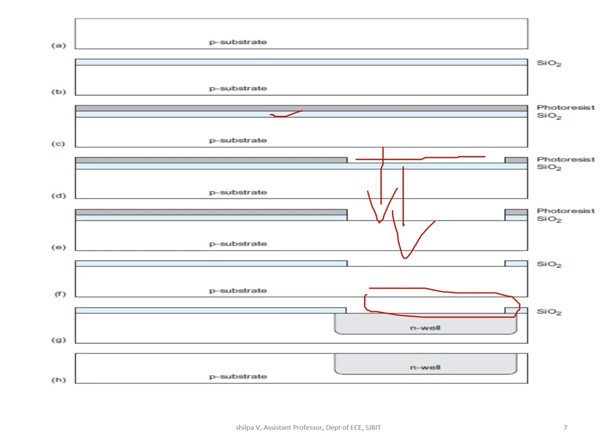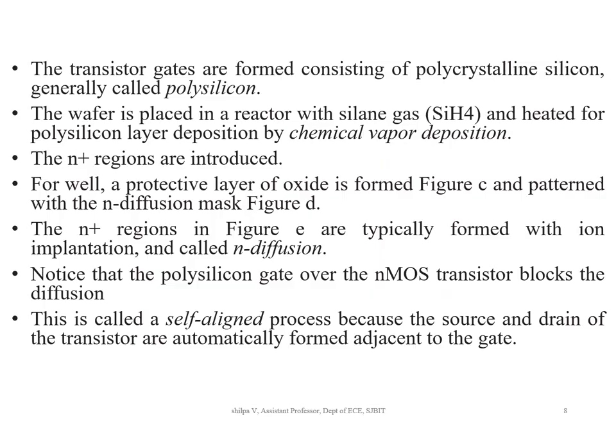The well is formed where the substrate is not covered with oxide. Two ways to add dopants are diffusion and ion implantation. In diffusion, the wafer is placed in a furnace with gas containing dopants. In ion implantation, dopant ions are accelerated through an electric field and blasted into the substrate. The oxide layer prevents dopants from entering where no well is intended.